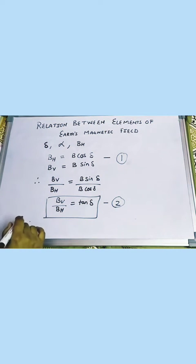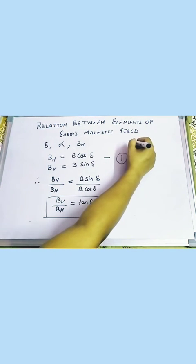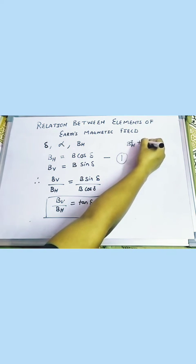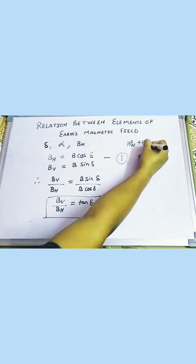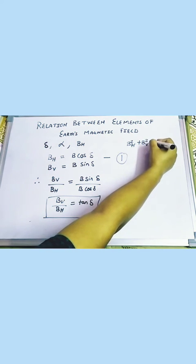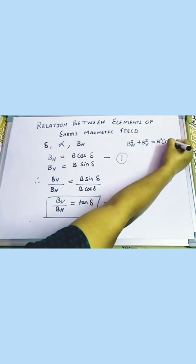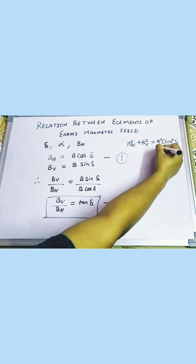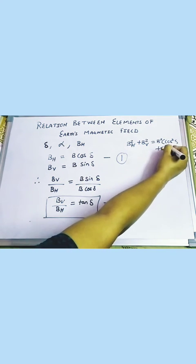From equations 1 and 2, we can also write B²H. Because it is making a right angle triangle, we can write BH² plus BV² equals B² cos² del plus B² sin² del.